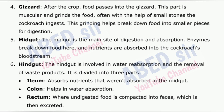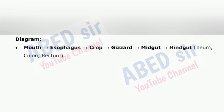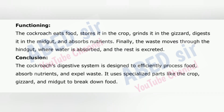3. Crop — The crop is a temporary storage area where food is stored after being swallowed. It also softens the food before it moves to the next stage. 4. Gizzard — After the crop, food passes into the gizzard. This part is muscular and grinds the food, often with the help of small stones the cockroach ingests. This grinding helps break down food into smaller pieces for digestion. 5. Midgut — The midgut is the main site of digestion and absorption. Enzymes break down food here and nutrients are absorbed into the cockroach's bloodstream.